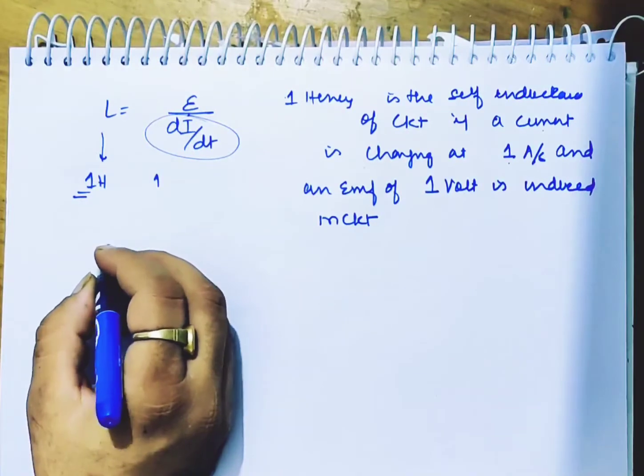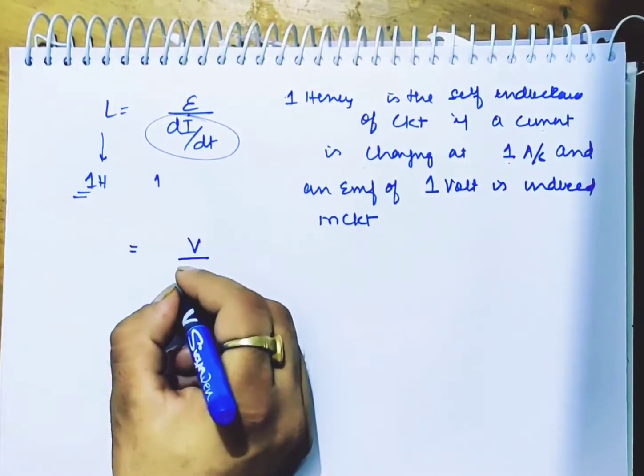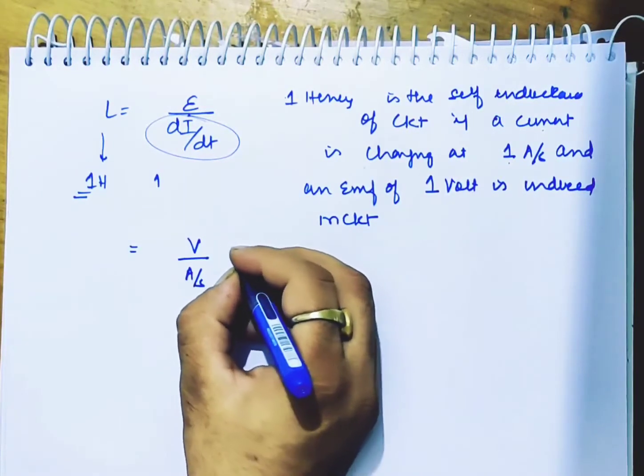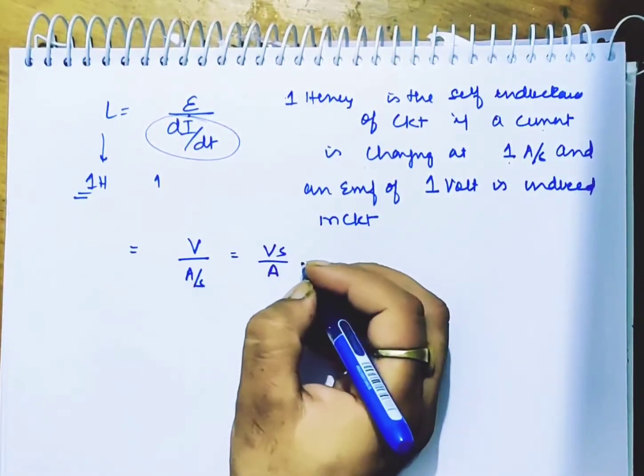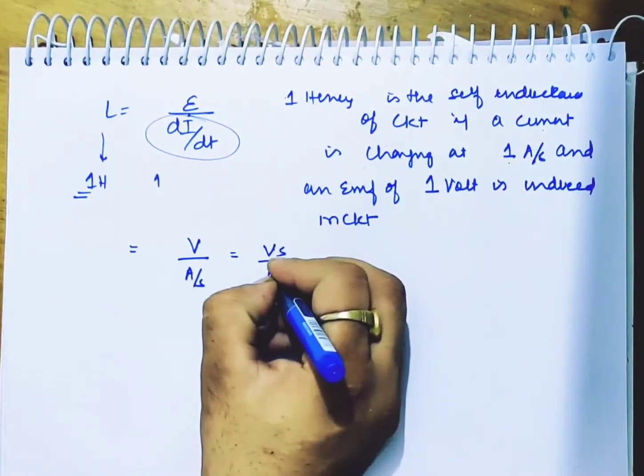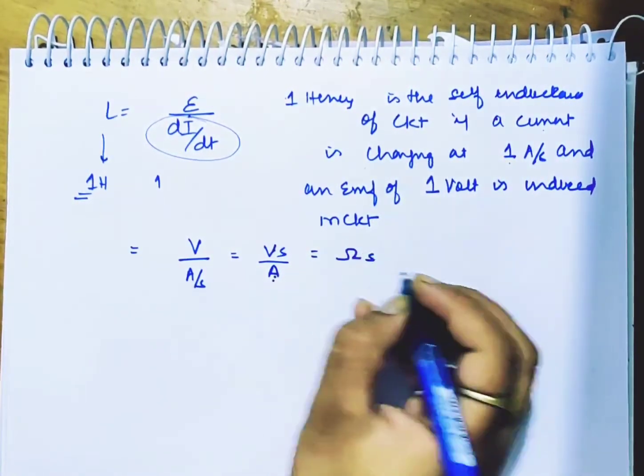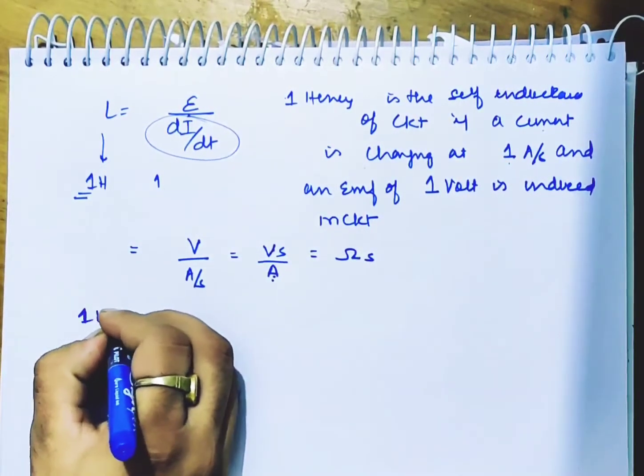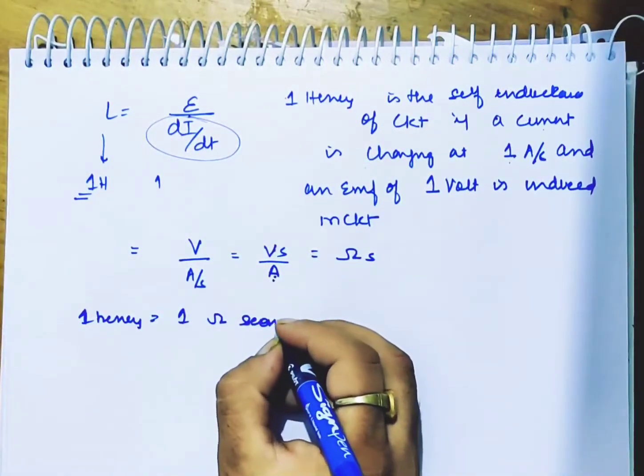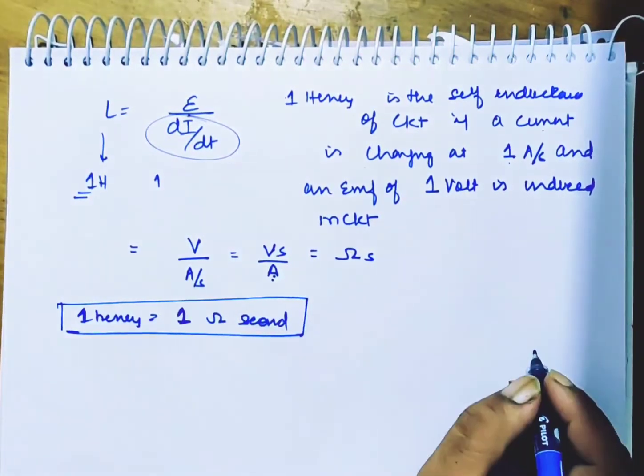Now its unit is Henry, and we have volt upon ampere per second, so we have volt-second divided by ampere. Now what is V divided by ampere? Voltage divided by current is resistance. So note: 1 Henry actually equals 1 ohm-second. You should also know this.